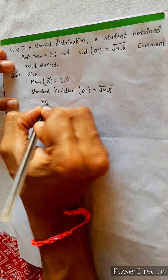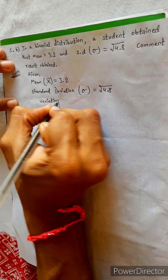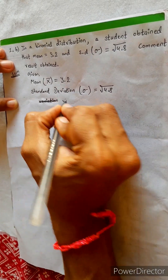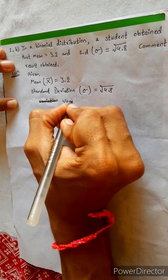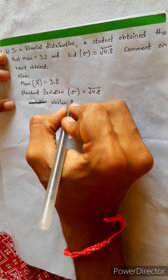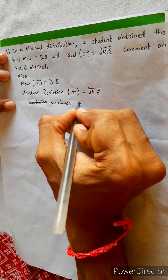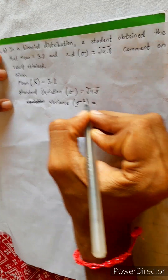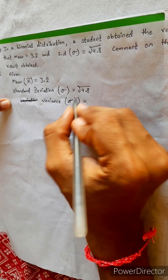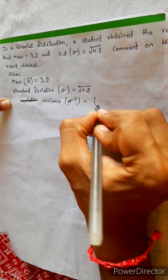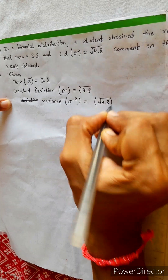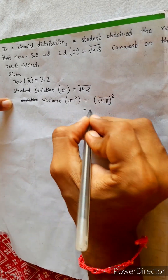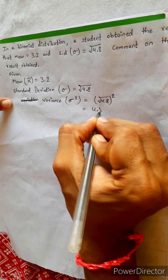We need to find the variance. Variance sigma square — what is the formula? We square it: root 4.8 squared. When we square root 4.8, the square and root cancel, so variance sigma square equals to 4.8.